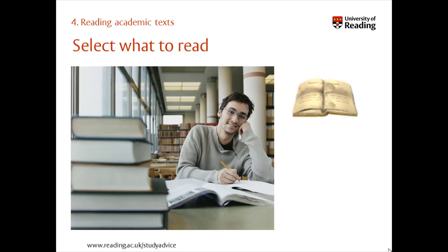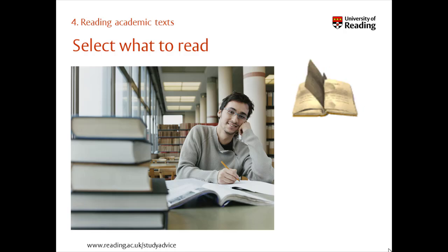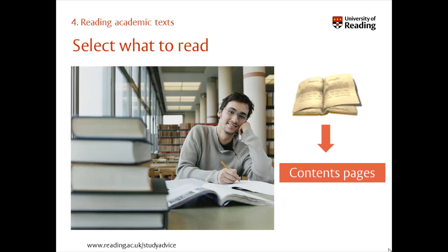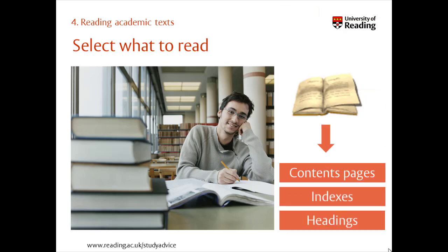Also, unlike a novel that has a plot and a narrative, academic texts are not designed to be read from cover to cover. You can also select which parts to read within a text, using the structure of the text — such as the contents page, index and headings — to direct you straight to the information that you need. Being selective is probably one of the most important abilities from academic reading that you'll develop throughout your time at university.